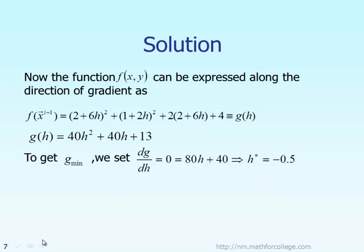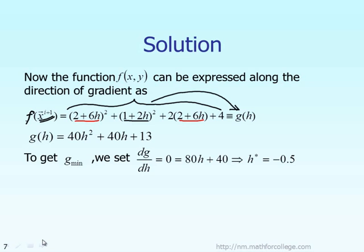After making those substitutions — replacing every x with 2 plus 6h and every y with 1 plus 2h — the objective function f evaluated at the new improved solution x at iteration i plus 1 is expressed solely in terms of the step size h. We give this a new name: function g, expressed in terms of h. Now f, or g, is only an expression in one variable h, which is the step size.